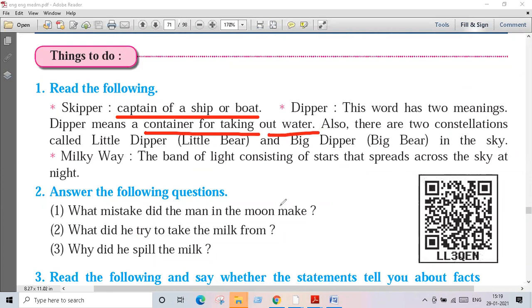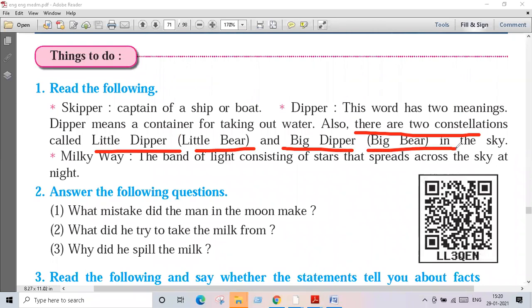Skipper is called Little Dipper, Little Bear, and Big Dipper, Big Bear. In the sky, the constellation is the one that is known as the dipper. Also, there are two constellations called Little Dipper, Little Bear, and Big Dipper, Big Bear in the sky.